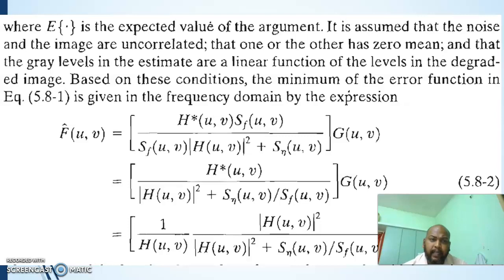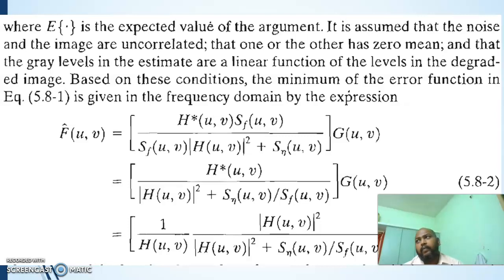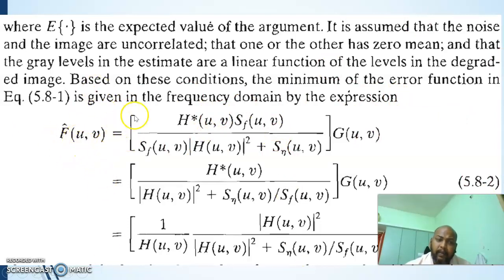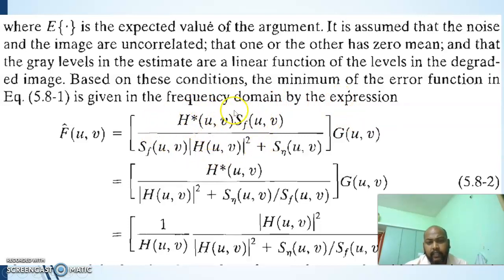The error function is calculated for minimum error, and from that we can derive the transfer function for the filter system. The restored image is equal to the transfer function of the filter multiplied by the input degraded image. The filter function is framed with respect to the power spectra, which represent the statistical characteristics of both the input image and the noise.